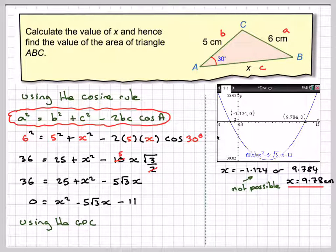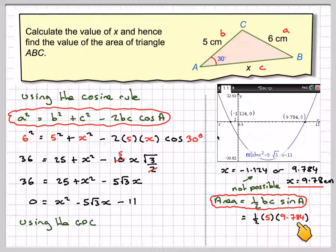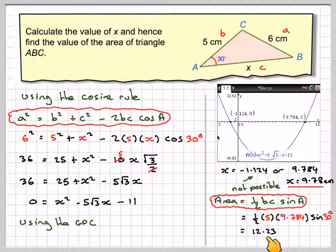And then the last part is we have to find the area. So now that we've got that, and that, we can do a half AB sine C. So the area is a half BC sine A in this case. BC sine A. So that's going to be a half of 5 times c, which is 9.784, times the sine of the angle between them, which is sine of 30, and that will give me 12.23, which gives me 12.2 centimetres squared correct to three significant figures.